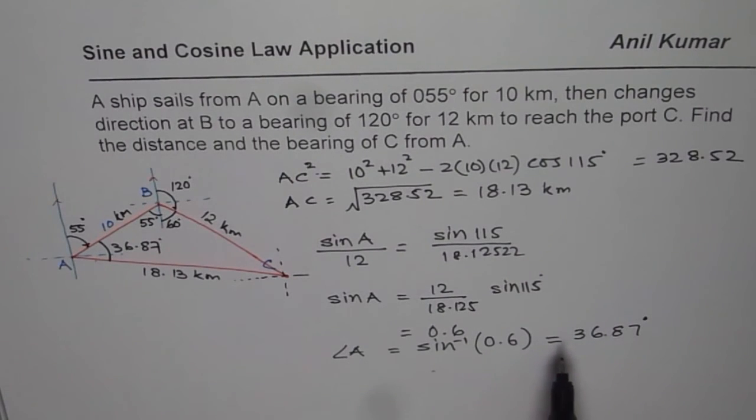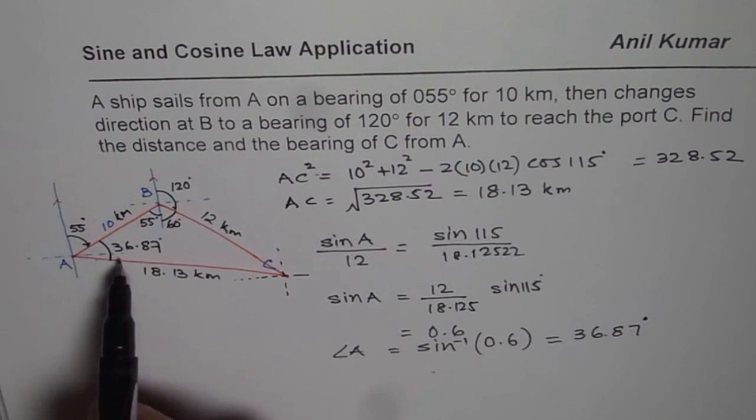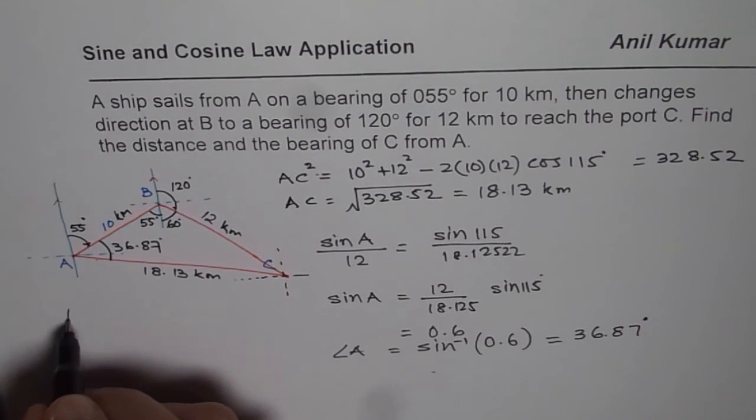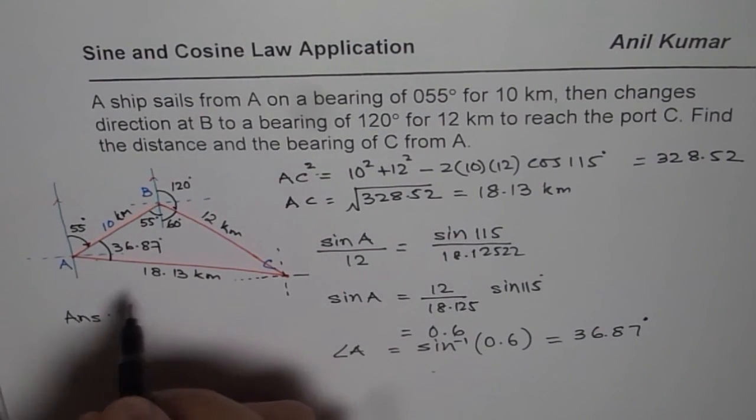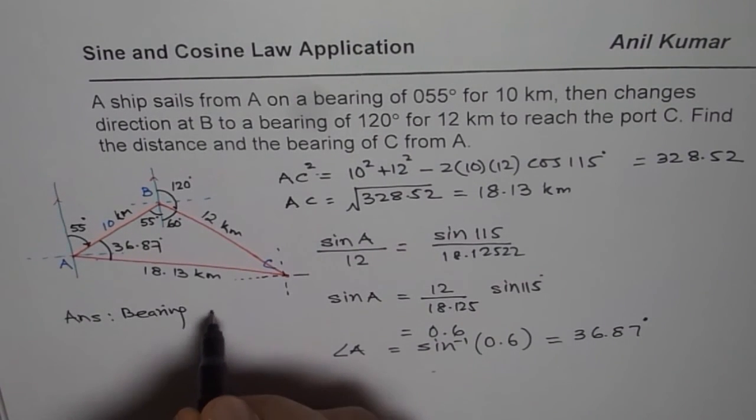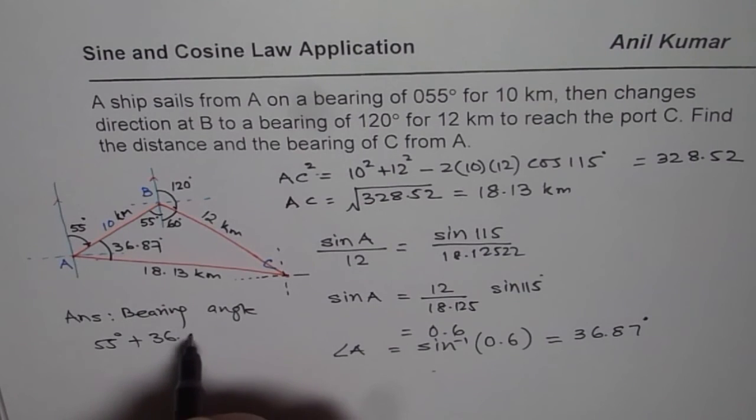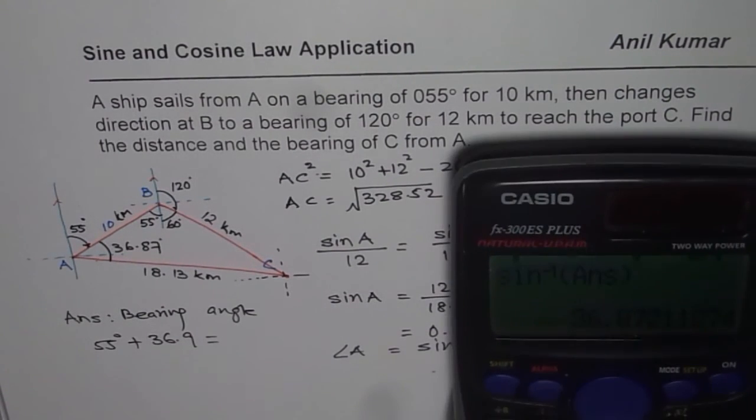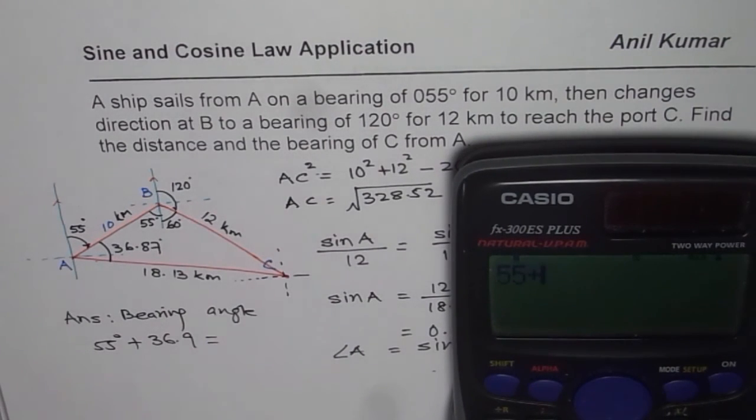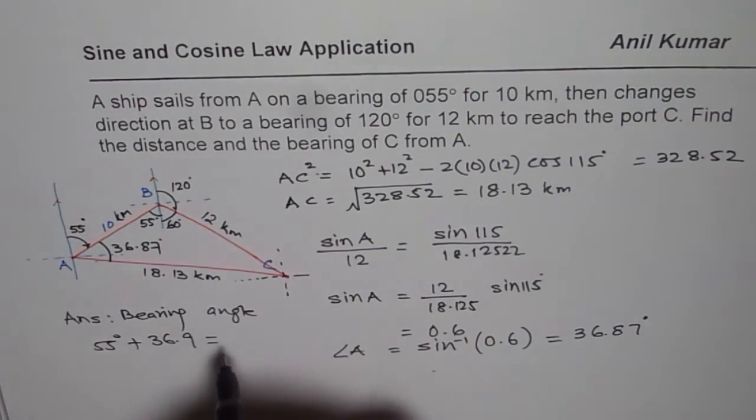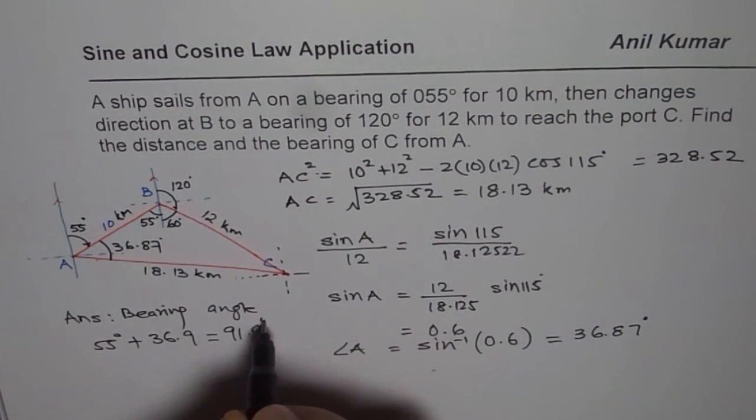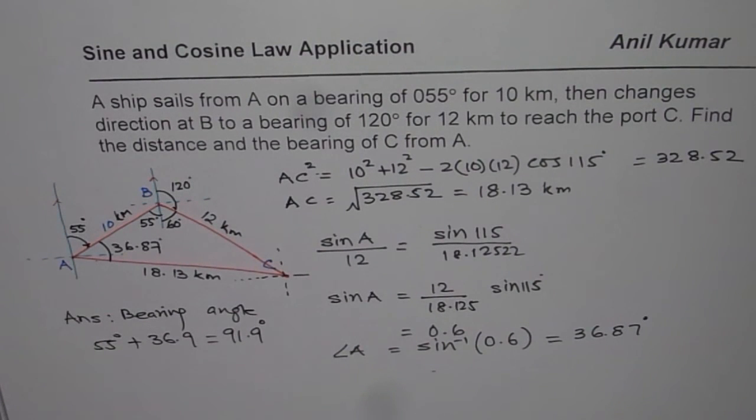Now to give the bearing from A, we have to add 55 degrees to this. So we can write down our answer, that is the bearing angle at C is 55 degrees plus what we got, that is 36.9. So that is the answer. We'll add 55 degrees plus 36.9 to get our answer, which is approximately 91.9. So 91.9 degrees is the bearing angle of C from A.